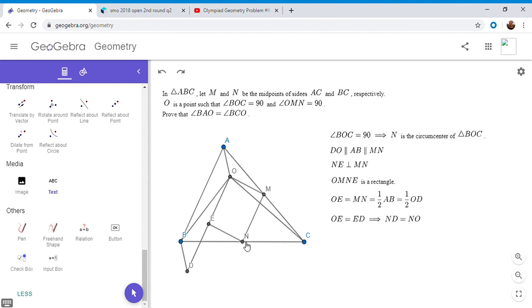So basically, since N is the circumcenter of BOC, all four of these segments, ND and B, NO and C, have to be equal. And so that means BOCD has to be a cyclic quadrilateral with center N. So BOCD is cyclic.